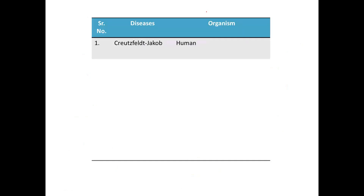What are the different prion diseases and what organisms do they affect? The first one is Creutzfeldt-Jakob disease, or CJD, which affects humans. Next is Kuru, which also affects humans. All these diseases affect the human brain and ultimately lead to death. Interestingly, this prion was linked to cannibalism — it was thought that the disease spread among tribes where people consumed the bodies of the dead, passing the misfolded protein from the deceased to the person who consumed it.